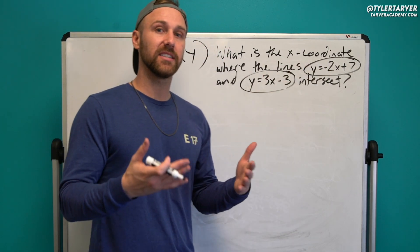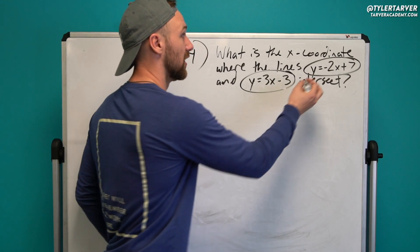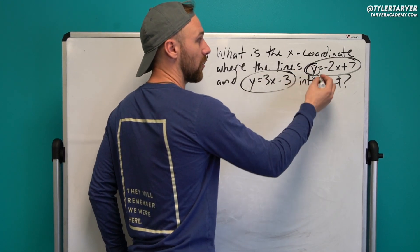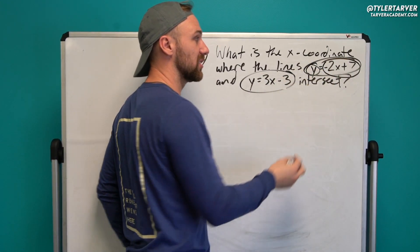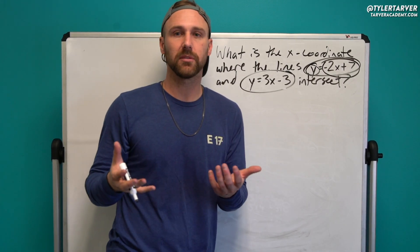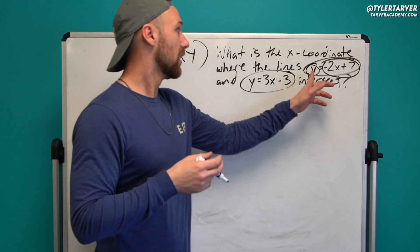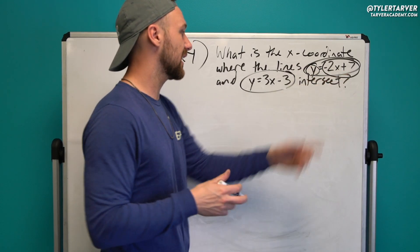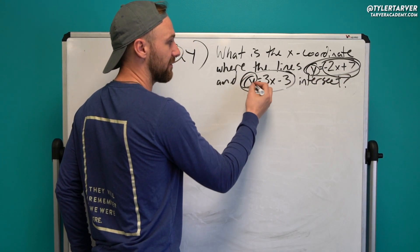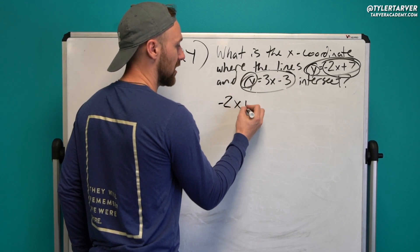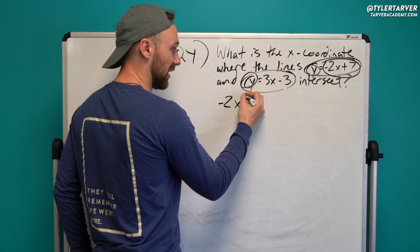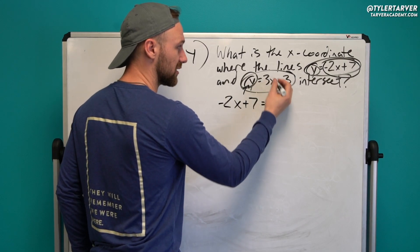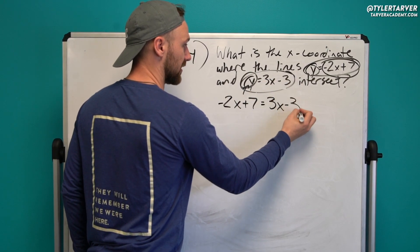So we can set these two. We can substitute in one of the equations, we can substitute what y is equal to for y. With substitution, you substitute what it's equal to. y in this equation is saying it's equal to negative 2x plus 7. So I can substitute that for y here. So I'm going to put negative 2x plus 7. I'm plugging it into this equation. So I just do equals 3x minus 3.